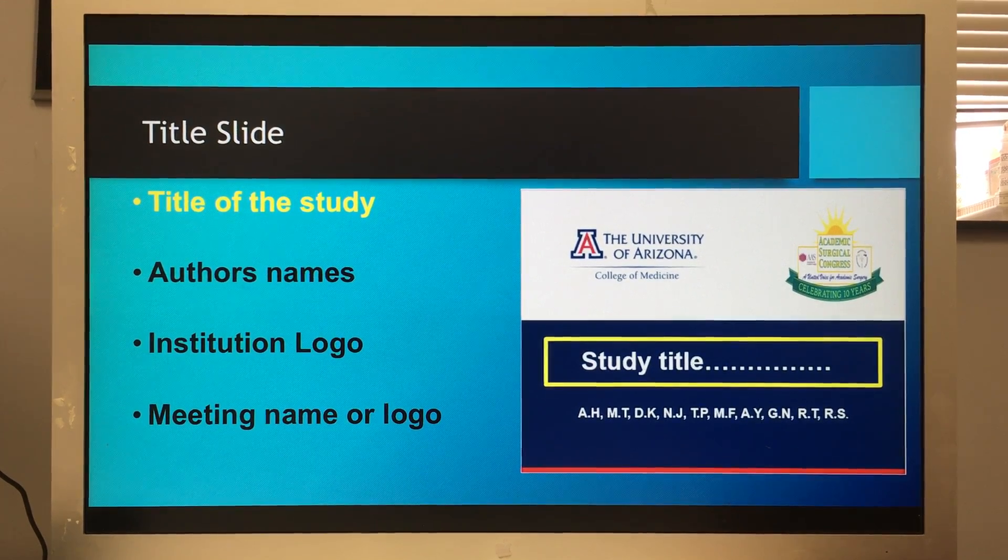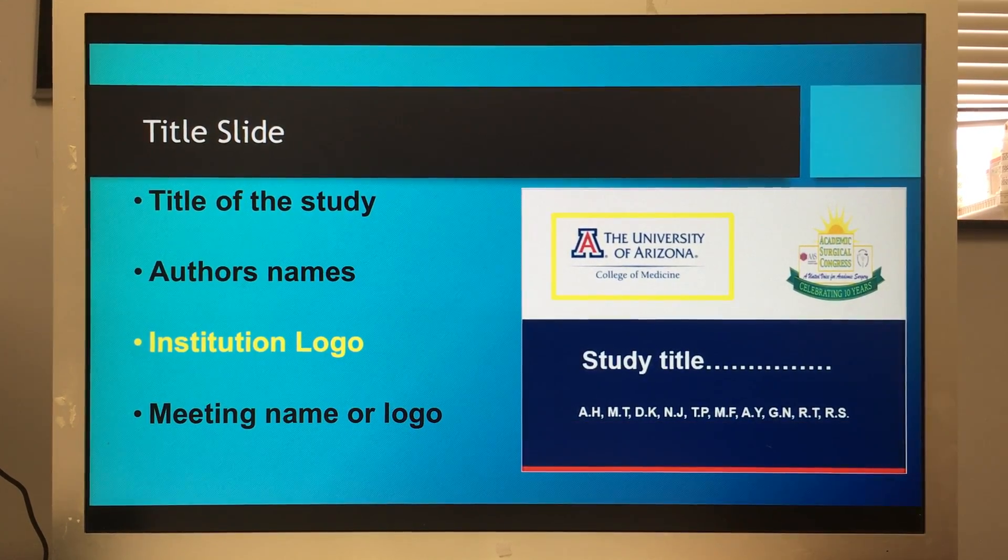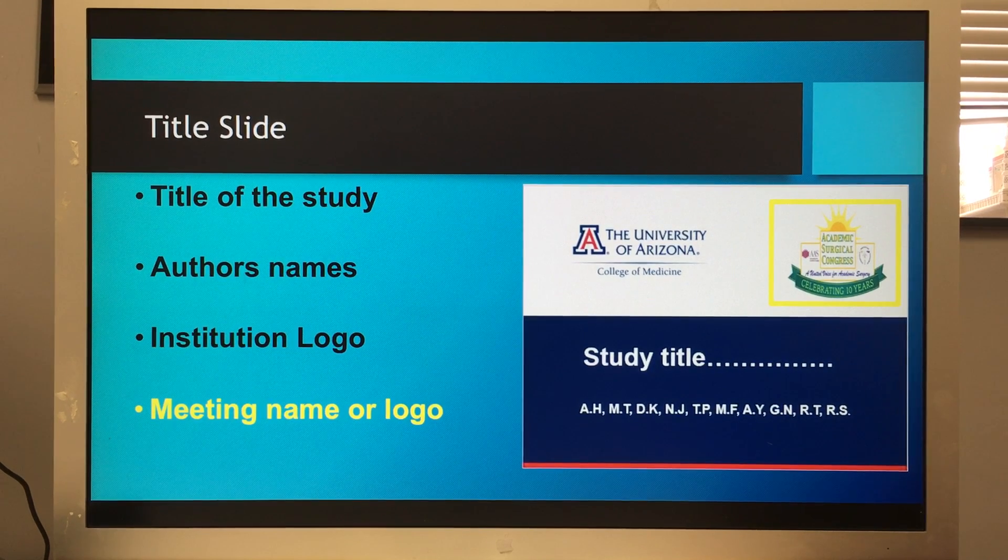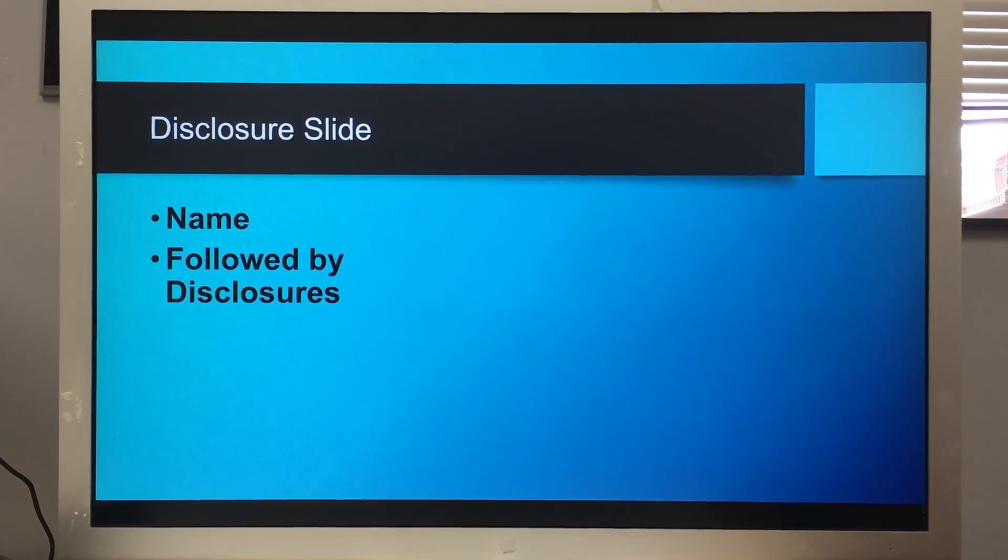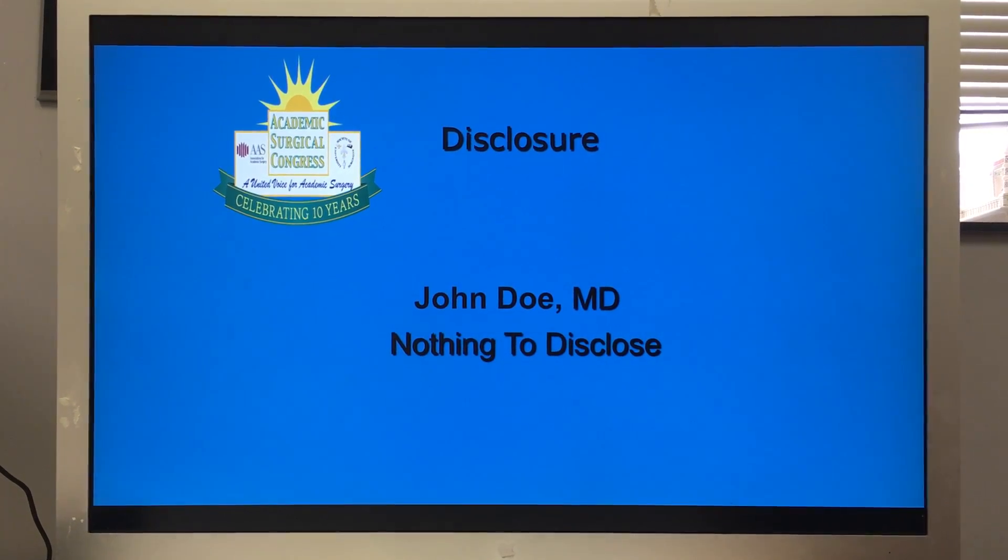Your title slide—again, this is easy—title of the study followed by your authors' names, your institutional logo, and if you wish, the meeting logo. The disclosure slide is simple: just your name followed by any disclosures.